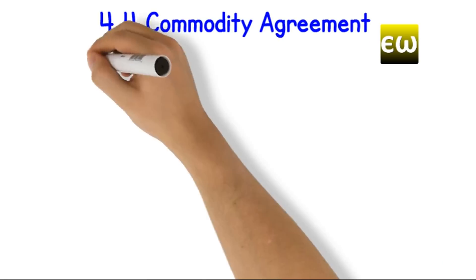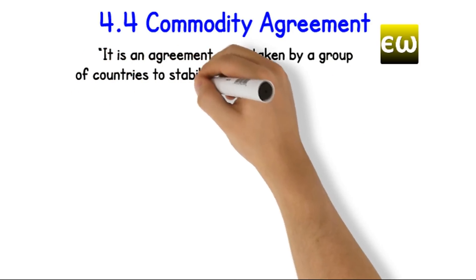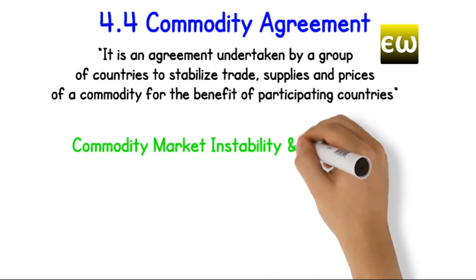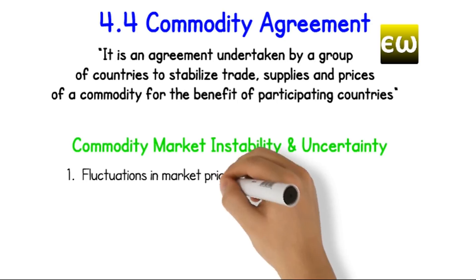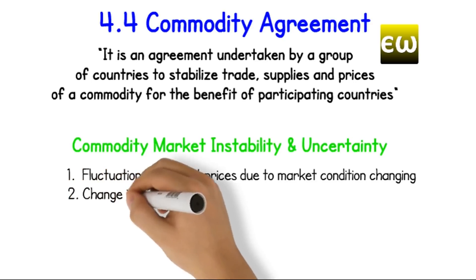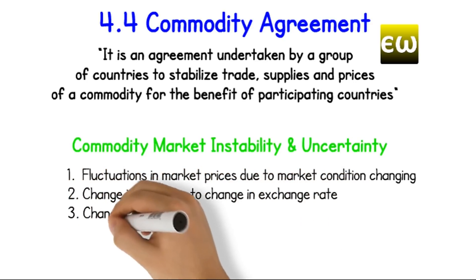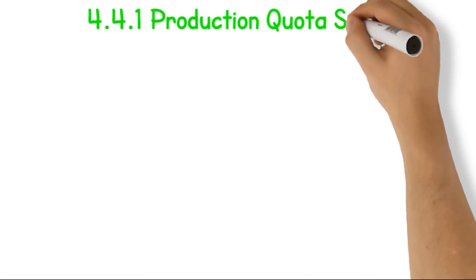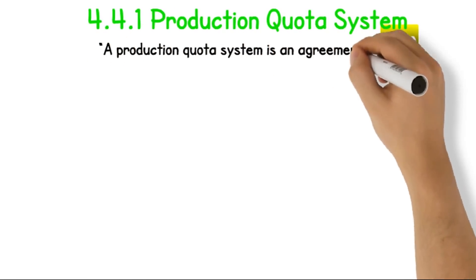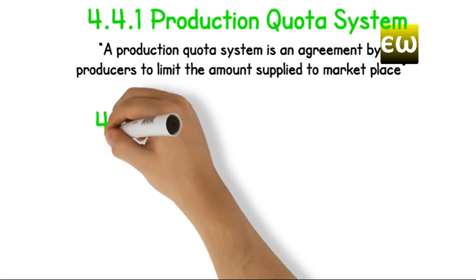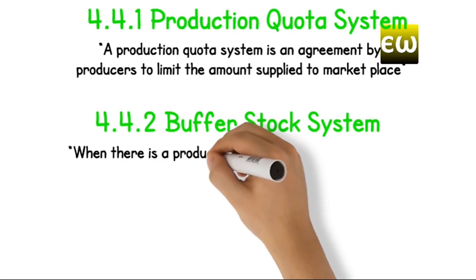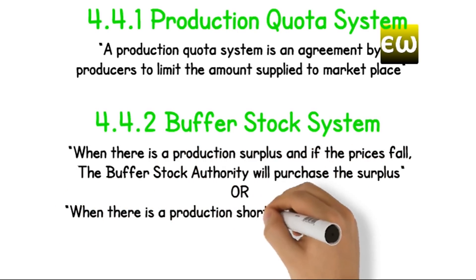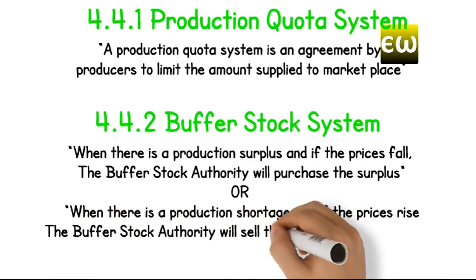Commodity agreement is an agreement undertaken by a group of countries to stabilize trade, supplies, and prices of a commodity for the benefit of participating countries. Commodity market instability and uncertainty arise from fluctuations in market prices due to changing market conditions, changes in price due to changes in exchange rates, and changes in foreign government protectionist measures. Production quota system: an agreement by producers to limit the amount supplied to the marketplace. Buffer stock system: when there is a production surplus and prices fall, the buffer stock authority will purchase the surplus; or when there is a production shortage and prices rise, the buffer stock authority will sell the previously acquired stock.